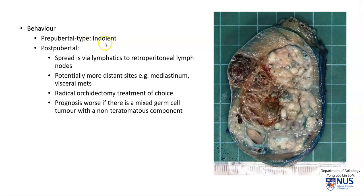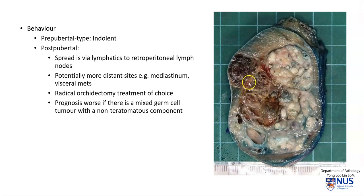Prepubertal-type teratomas are indolent. However, postpubertal-type teratomas do have metastatic potential, and they spread via lymphatics. Often the first site of metastasis is to retroperitoneal lymph nodes, though they can affect more distant sites. Usually, radical orchidectomy is the treatment of choice. And if there are mixed germ cell tumor components, the prognosis is worse when there is an additional non-teratomatous component — for example, a tumor with a teratomatous component alongside choriocarcinoma and areas of yolk sac tumor. This is the uninvolved testis.